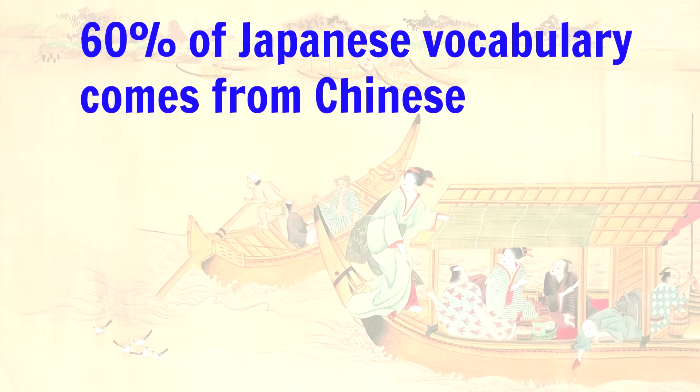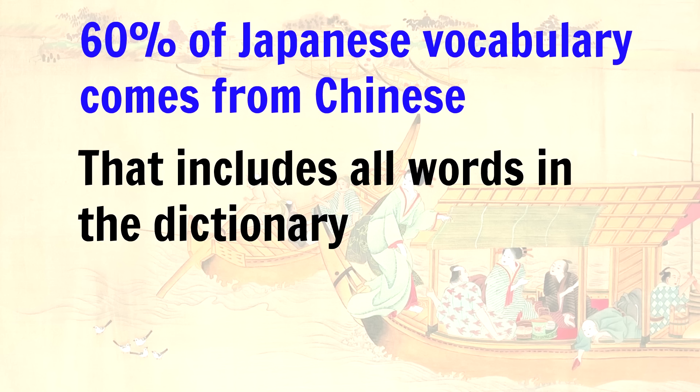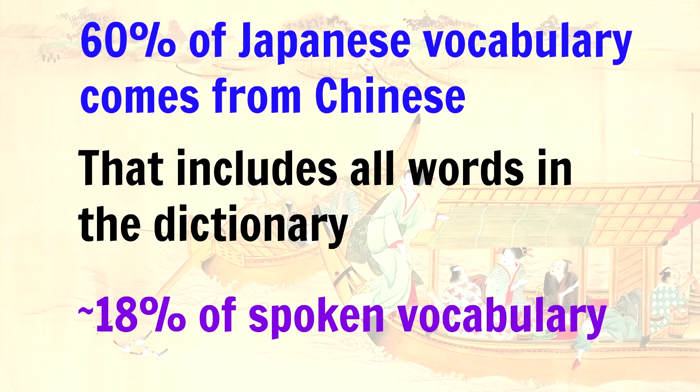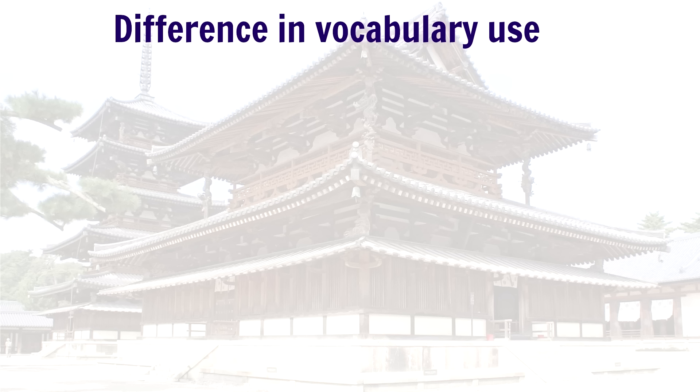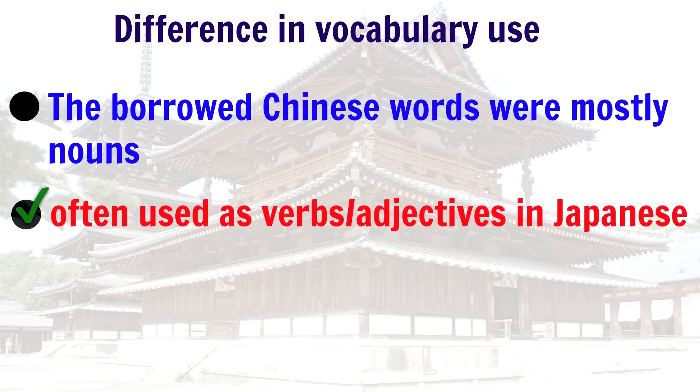60% of the vocabulary words used in Japanese are of Chinese origin, but that includes all of the words in the dictionary, and that includes a lot of very specialized academic and formal vocabulary that's mainly used in writing. In spoken Japanese, the number of Chinese loan words used is much lower, at about 18%. The borrowed words were almost all Chinese nouns, even though in Japanese they might be used as verbs or as adjectives.